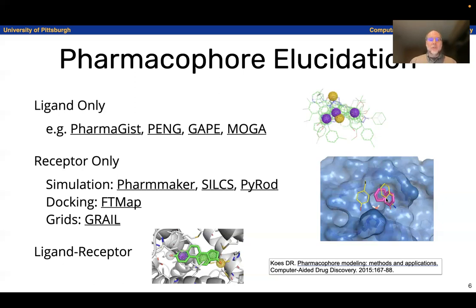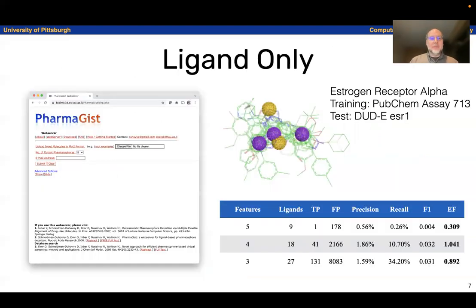Ideally, you have both a ligand and receptor — a structure with a ligand bound — and then the problem becomes relatively straightforward. You just look at it and see what the interactions are in the complex. That's what Pharmit will do for you. If you give it a receptor and a ligand, it says here are the interacting features. As an example, using the ligand-only approach with Pharmagist, targeting estrogen receptor alpha, I have a training set from a PubChem assay of various compounds active against estrogen receptor, and uploaded to Pharmagist, which produced a consensus pharmacophore from these compounds.